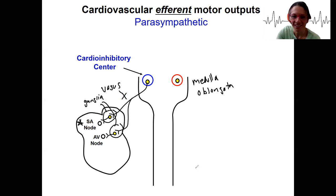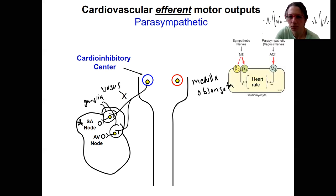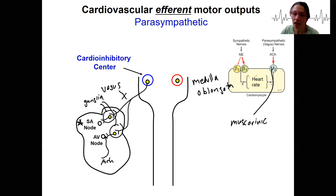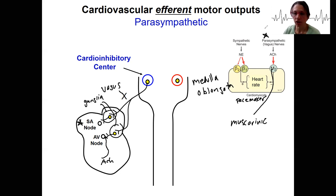How does this work? What is released? Acetylcholine is released and binds to muscarinic receptors — M2 muscarinic receptors. These receptors are located within the heart cells, the cardiomyocytes, including the pacemaker cells we're looking at right now. The action of ACh on muscarinic receptors somehow slows the heart rate, and this is stimulated by the cardioinhibitory center in the medulla.